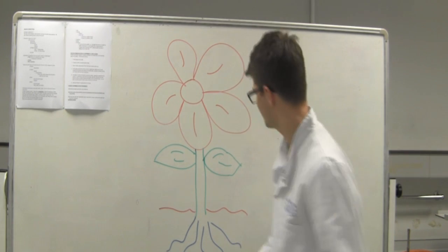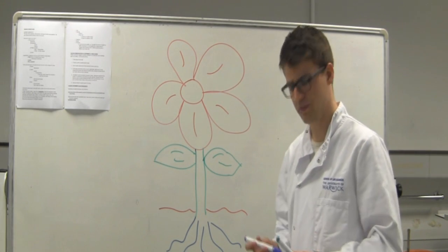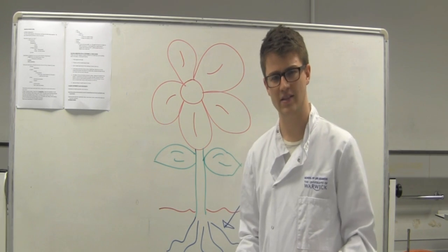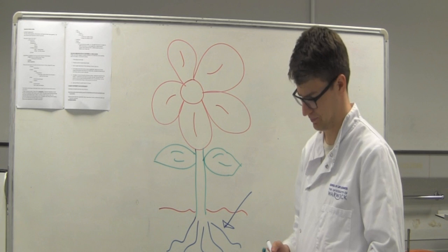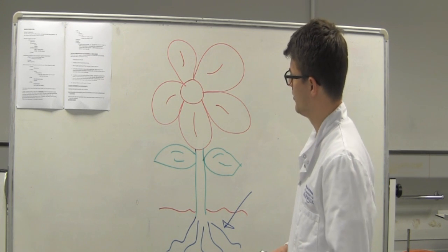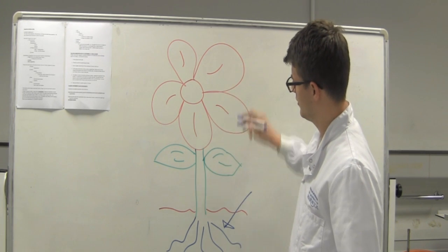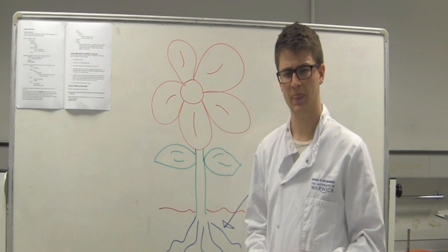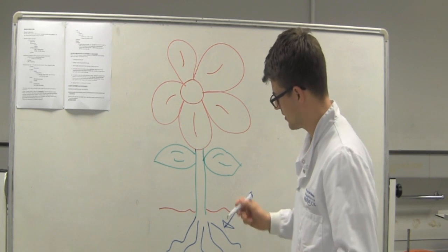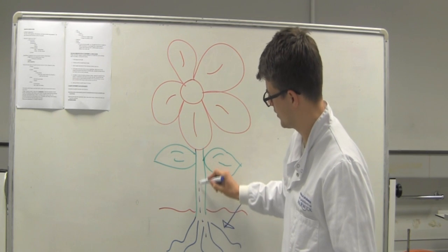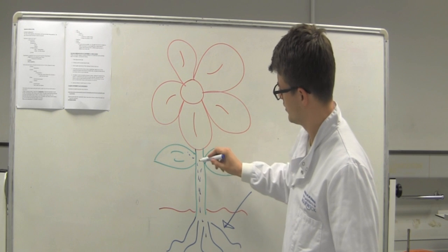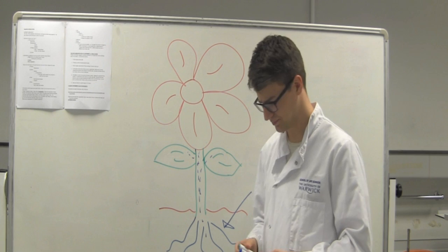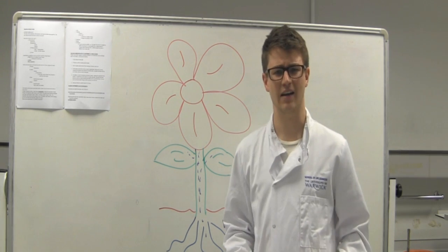So we all know that in a plant the roots are the main site for water absorption, but we also know that the flower and the leaves also need water. So that means there must be some sort of transport system to get the water to these areas, and that's exactly what there is.